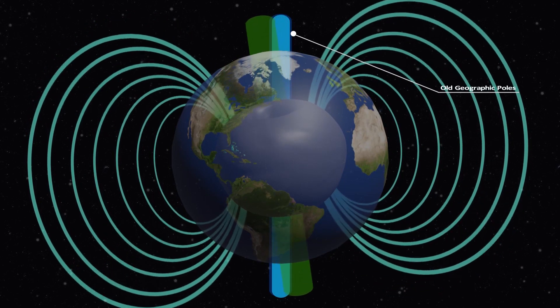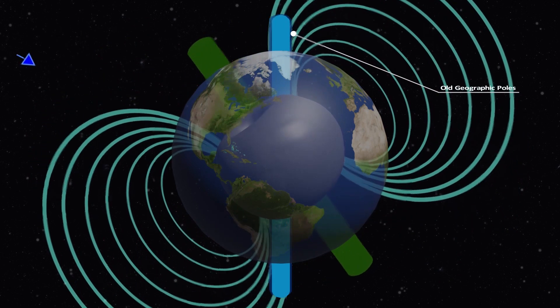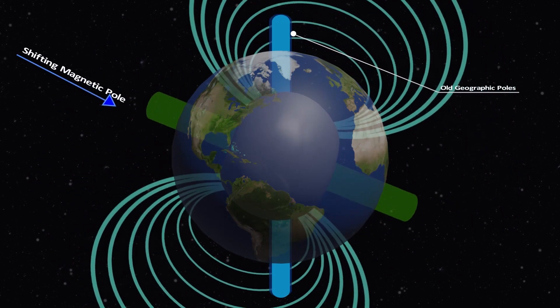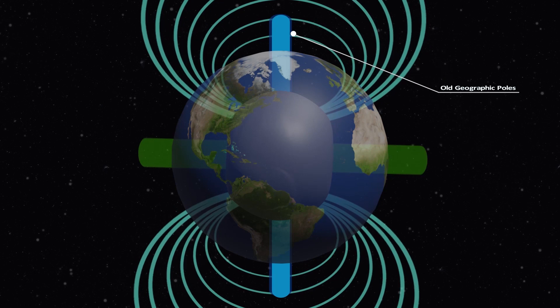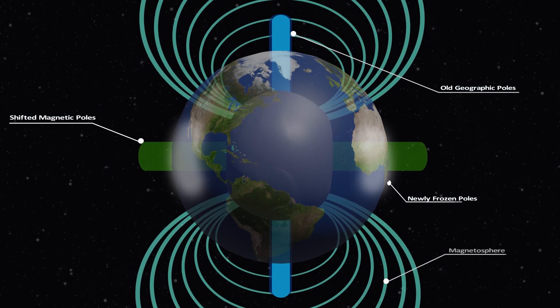The inner core's shift would cause the toroidal-shaped magnetosphere to also shift, and consequently would expose a new geographic area to extreme cold weather due to the opening in the torus sphere moving into a new geographic region, expanding the frozen polar region and causing a mini ice age. This could have drastic consequences on Earth's weather.